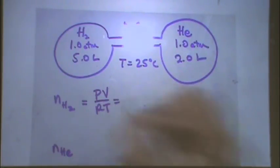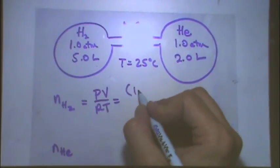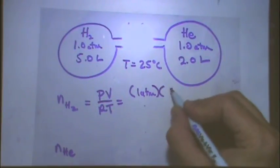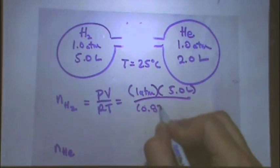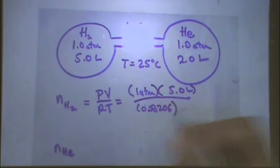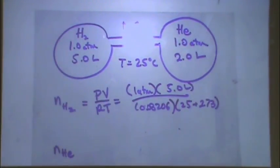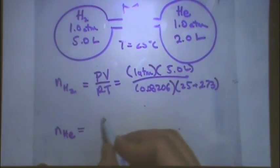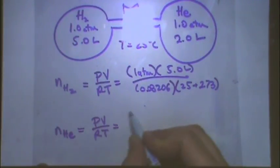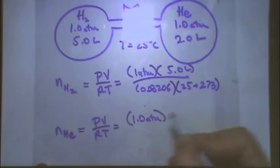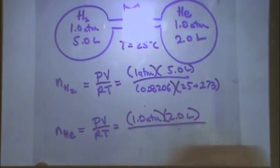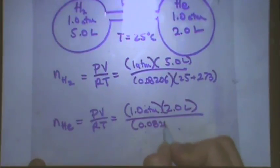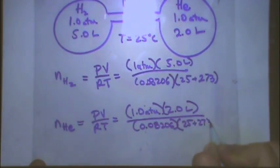The way I would get moles is just use the ideal gas law. The pressure for H2 is 1 atm. The volume is 5 liters. R is 0.08206. T is 25 plus 273. By the way, if we don't give you the temperature, it's probably 25 if you want to assume that. You also find the moles of helium the same way. 2 atm, 2 liters, and 25 plus 273.